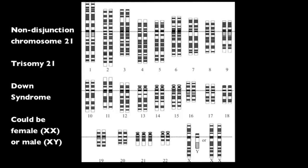Down syndrome can be identified on a karyotype by looking for three copies of chromosome number 21, known as trisomy 21. The karyotype will also show whether the individual is a male XY or a female XX.